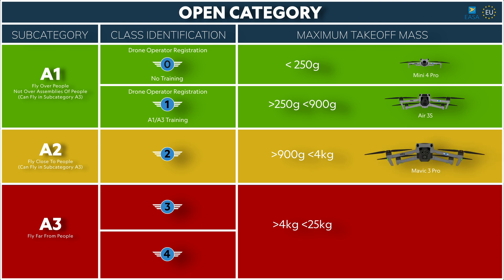The Mavic 3 Pro is a 958-gram drone, so its class identification is C2. To legally fly in the EU you are required to register yourself as a drone operator, complete online training for the A1/A3 open subcategory, and additional training for the A2 open subcategory.